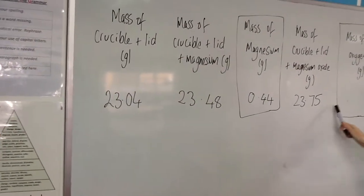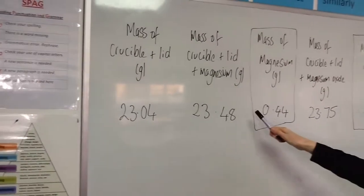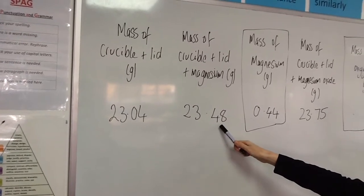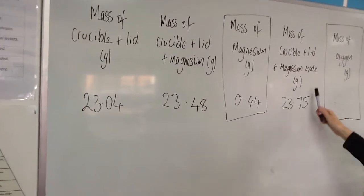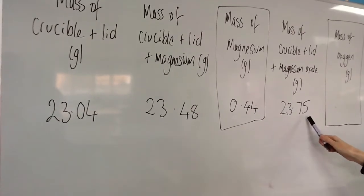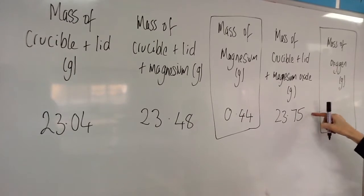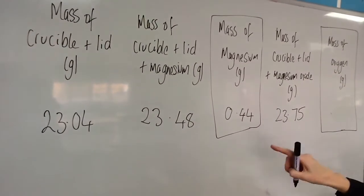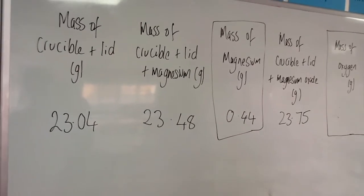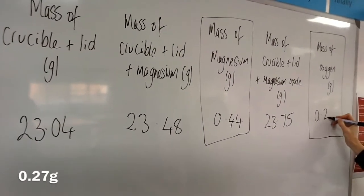I'm going to use that data now to calculate the mass of the oxygen. I know that the mass of the crucible, lid and magnesium is 23.48 grams. The mass of the crucible, lid and magnesium oxide is 23.75 grams. The only difference between these two is that this contains oxygen. So the difference of these two values will give me the mass of the oxygen. And the difference between those two values is 0.27 grams.